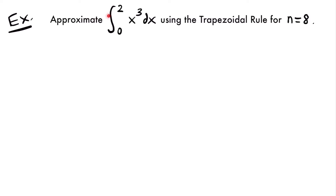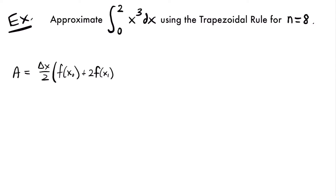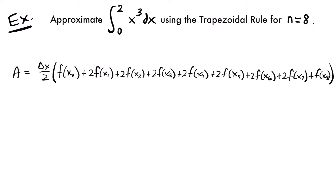For our next example, we want to approximate the integral from 0 to 2 of x cubed dx using the trapezoidal rule for n equals 8. Since n is equal to 8, we're going to use 8 trapezoids to approximate this area. Using the trapezoidal rule, the area equals delta x divided by 2 times f of x sub 0, with the rest of our terms multiplied by 2, up through f of x sub 8.